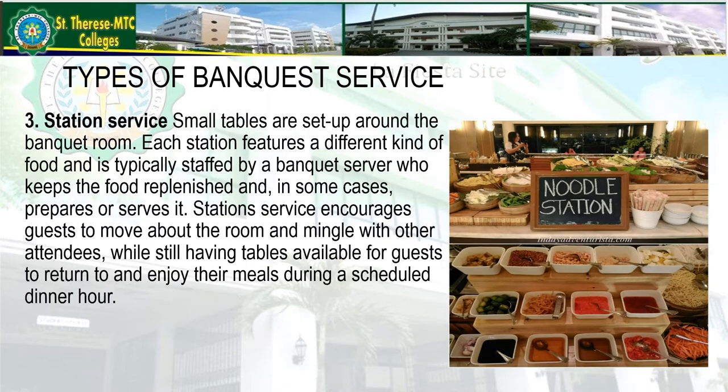The third type of banquet service is station service. Small tables are set up around the banquet room. Each station features a different kind of food and is typically staffed by a banquet server who keeps the food replenished and in some cases prepares or serves it. It is a modified form of buffet service and typically costs somewhere between the price of a buffet and sit-down meals.